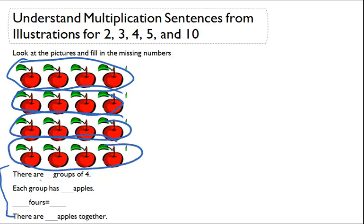So there are how many groups of 4? 1, 2, 3, 4. 4 groups of 4, that's great.